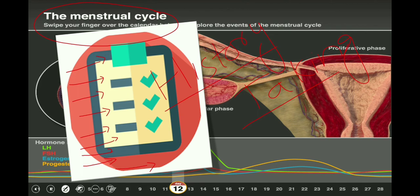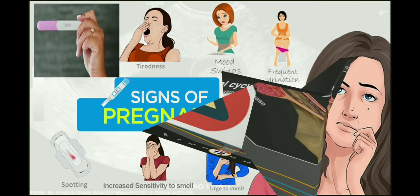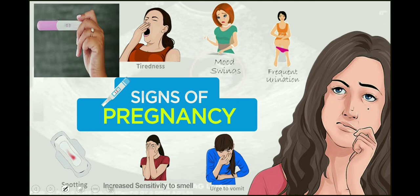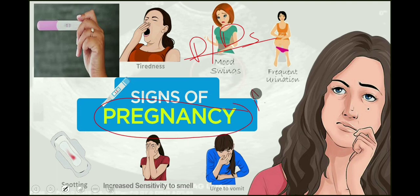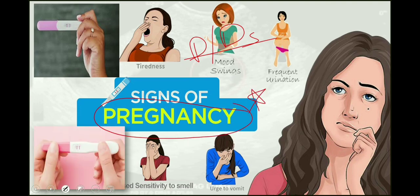Specific to abnormal uterine bleeding, we have to ask certain questions by keeping differential diagnosis in mind. If a woman is in the premenopausal or reproductive age group, we have to ask questions to rule out pregnancy first. We need to ask questions related to pregnancy like amenorrhea, morning sickness, breast changes, mood swings, and frequency of urination to make sure whether she is pregnant or not.